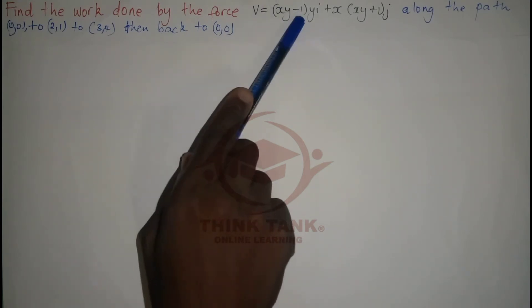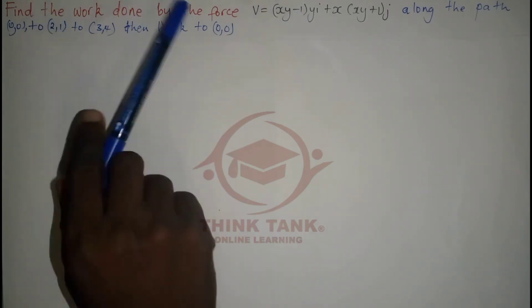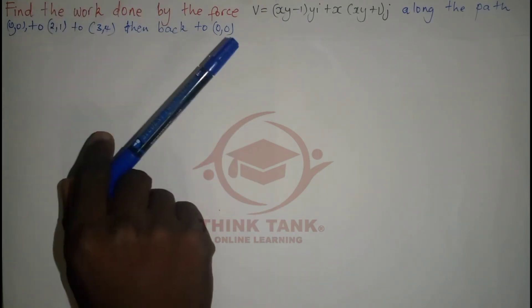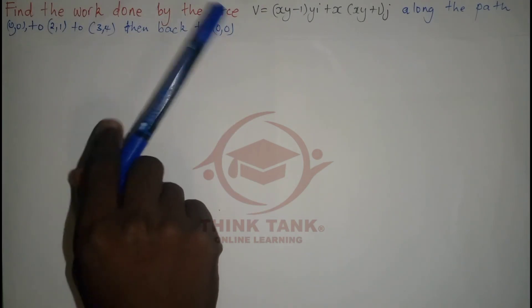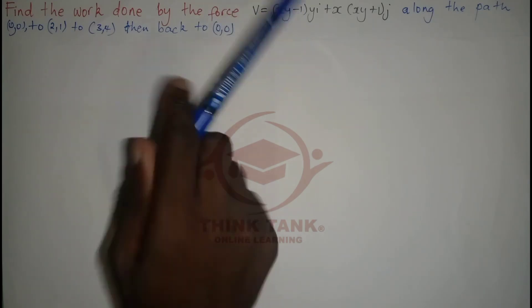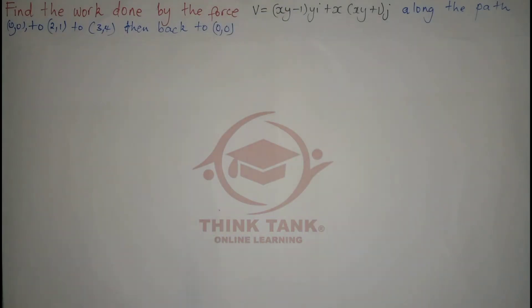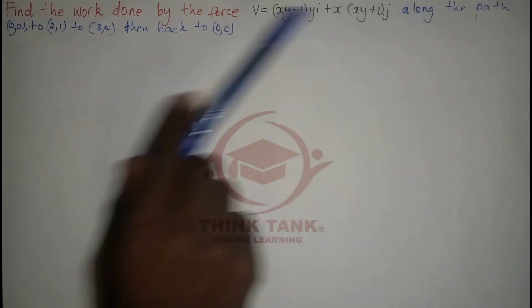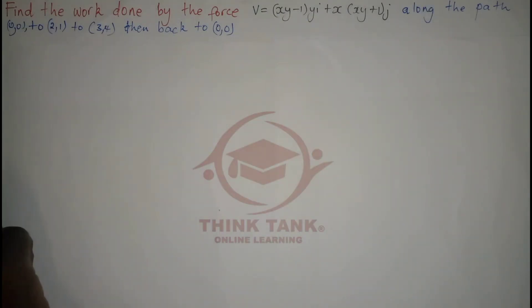If the vector field is conservative, the work done will be equal to zero. But this vector field is not conservative, so there's no need to calculate its scalar potential. I'm going to use the direct method.